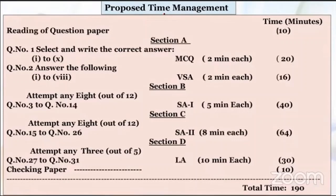Section D — attempt any 3 out of 5. Question 27 to Question 31, long answer. Each question you should take only 10 minutes. The total time for all sections combined is 190 minutes, meaning 3 hours 10 minutes. This 10 minutes will be provided to you before starting the actual writing of the paper. So in short, you have to manage your time accordingly so that you can complete your paper within 3 hours.